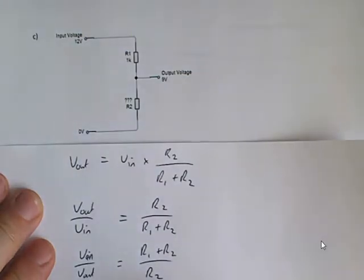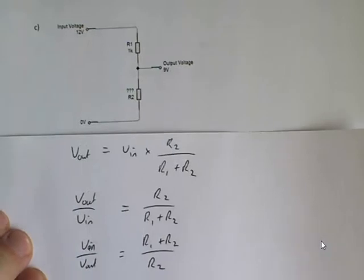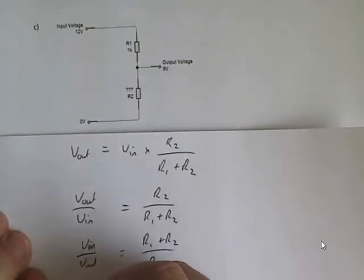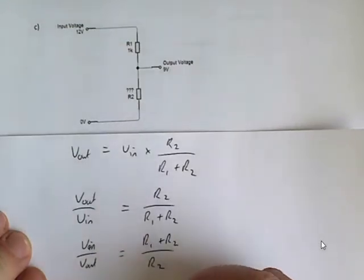Now you're wondering why I did this first, it's because I need to be able to then split this up into its separate fractions. So V in over V out equal to R1 over R2 plus R2 over R2.